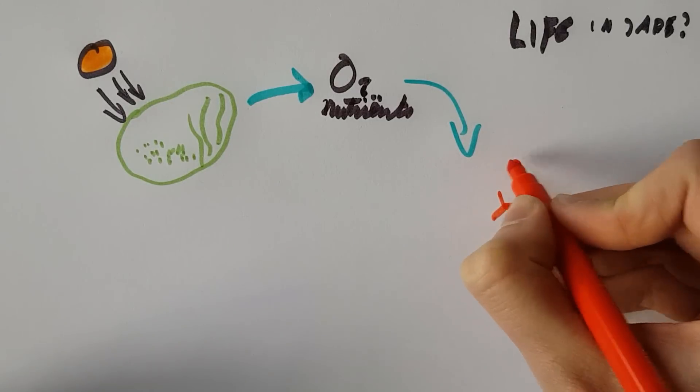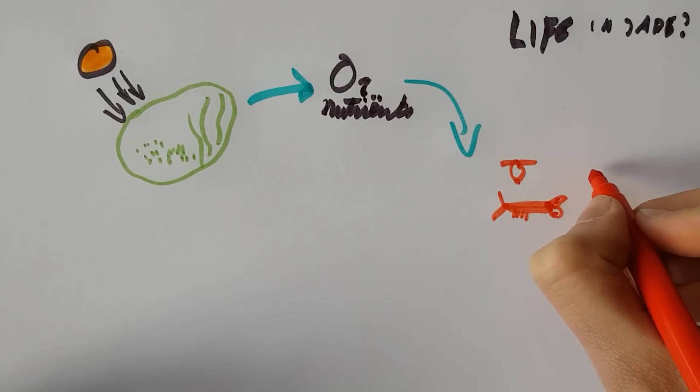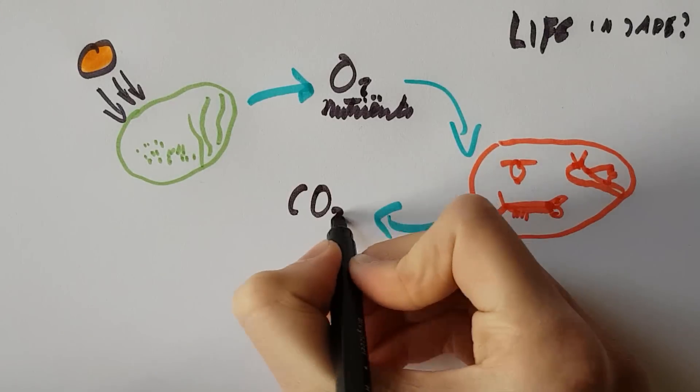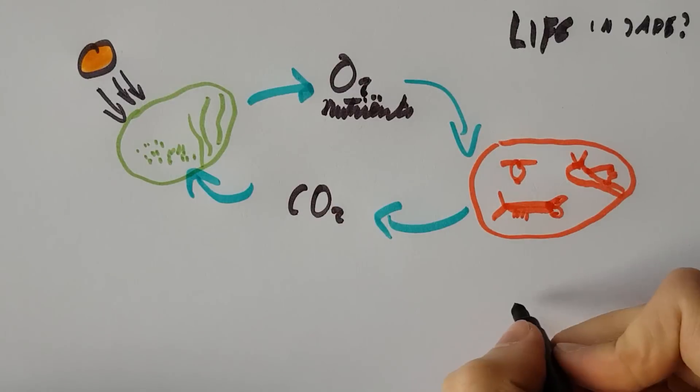And crustaceans like Daphnia and copepods and also snails. Yes, this is how I draw a snail. Deal with it. The critters breathe out carbon dioxide, which the plants and algae use to grow.